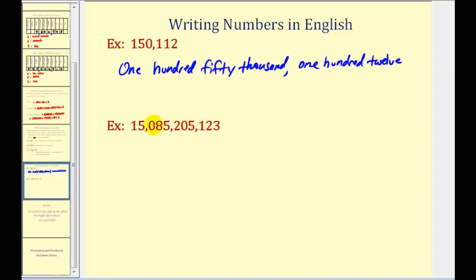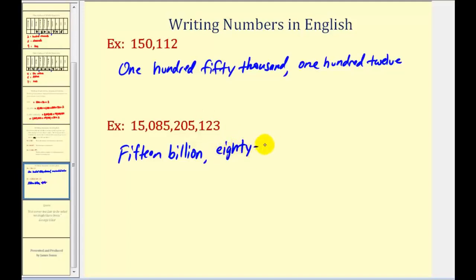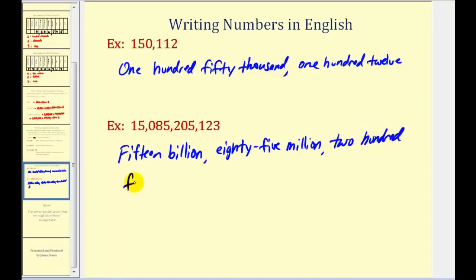In our last example, here we have the thousands, millions, and billions. So we have fifteen billion, eighty-five million, two hundred five thousand, two hundred, one hundred twenty-three.